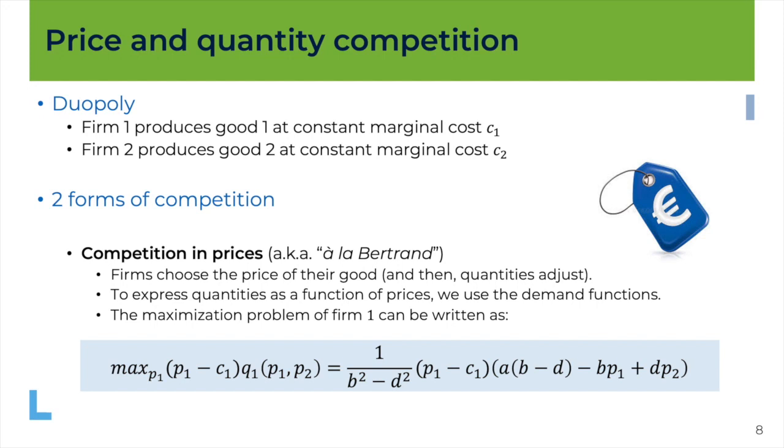And this is why we will use here the demand functions and write the profit of for example firm one as follows. It's p1 minus c1. This is the excess of price over marginal cost. This is also called the margin times the quantity sold. And if you replace the demand function by its value, well you've got this profit function here,